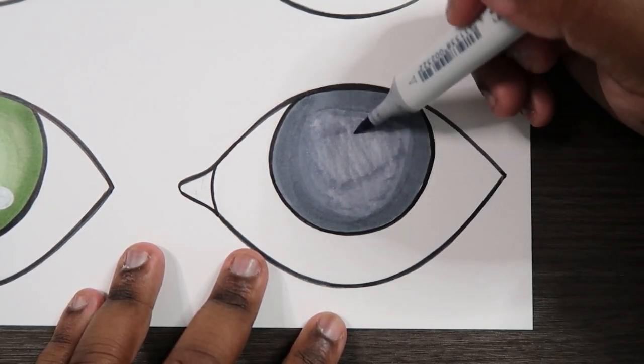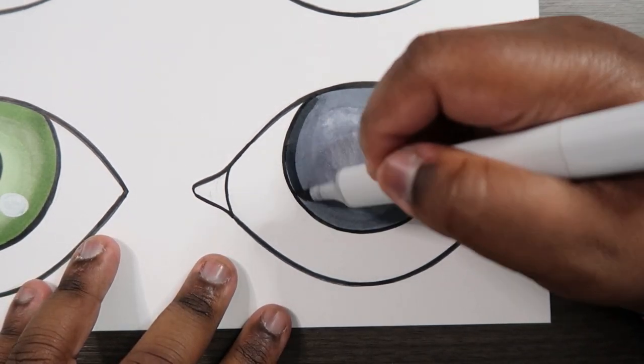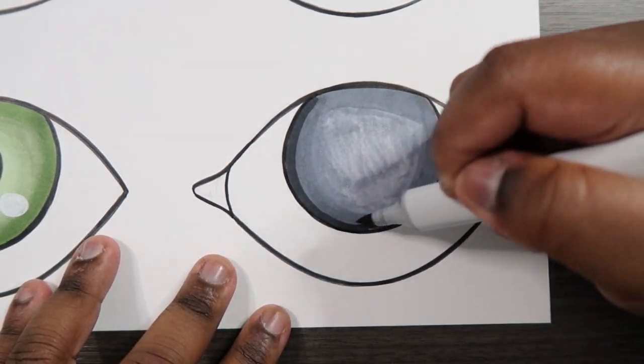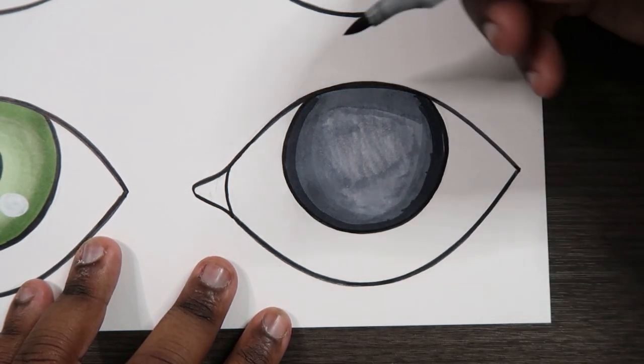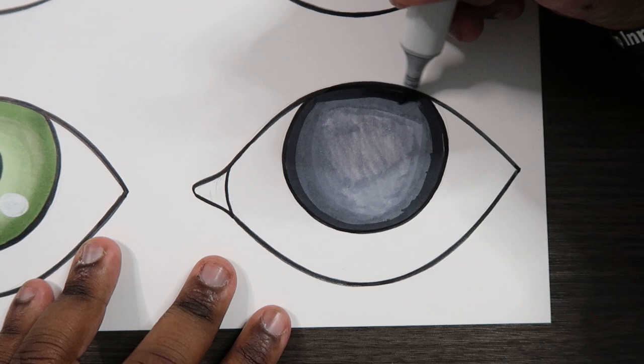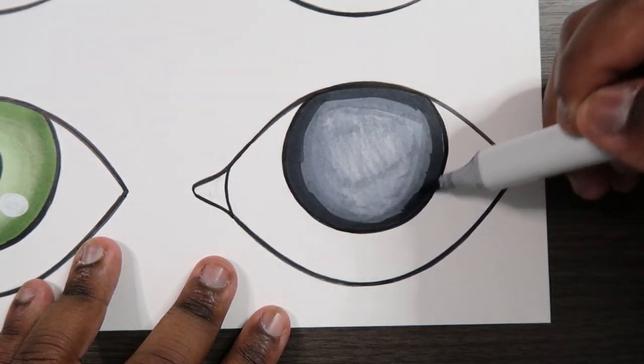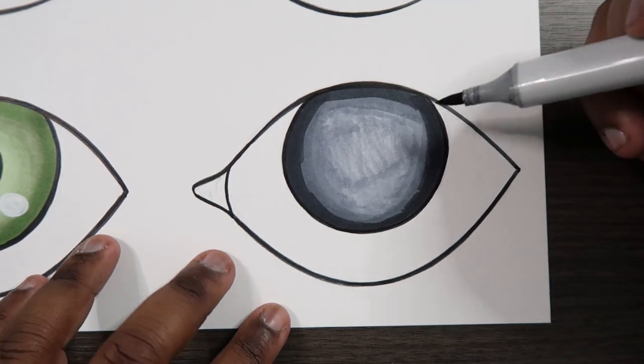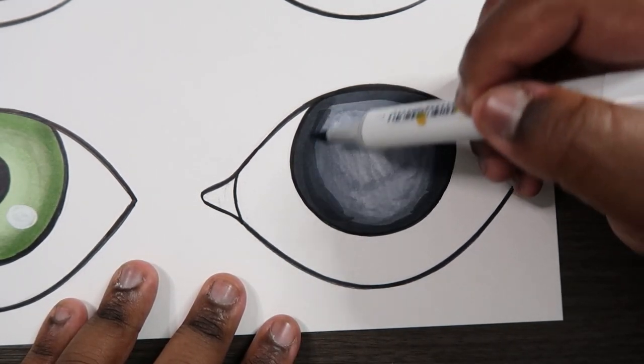Yep. This marker is running very low on ink. So let's see what happens when I go to my C9 and start adding shades here. And now we're seeing a greater difference in value with this C9. And then let's use our C7 to blend.